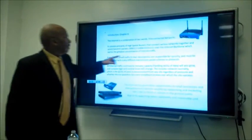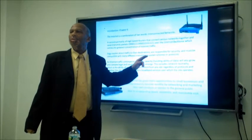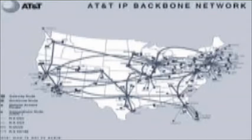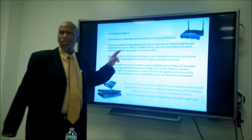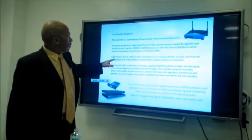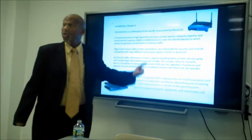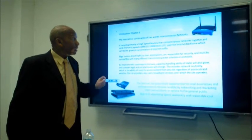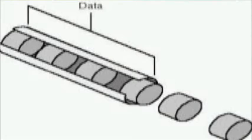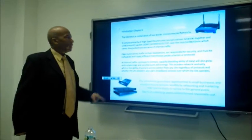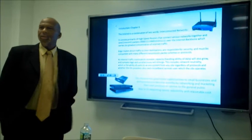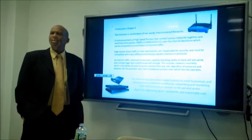The internet backbone carries the greatest concentration of internet traffic. Tier one controls telecommunication in the world — companies like AT&T and Verizon are among the four major tier-one providers globally. Edge routers direct traffic to their destinations, are responsible for security, and must be compatible with many different transmission schemes or protocols. Routers are the key in terms of getting information from one destination to the other, which is incredible.